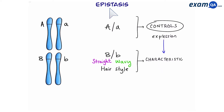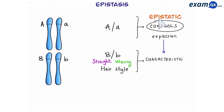In epistasis we have two genes which interact, and one gene controls the expression of another gene. The gene responsible for controlling the other gene is called the epistatic gene, and the gene that is being controlled is referred to as the hypostatic gene.